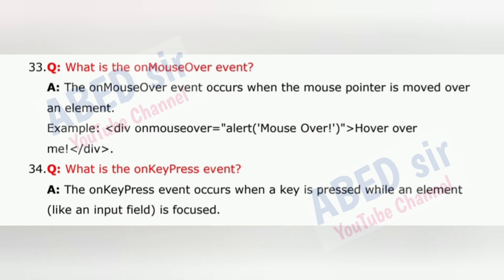Question 33: What is the onmouseover event? The onmouseover event occurs when the mouse pointer is moved over an element. Example: <div onmouseover='alert("mouse over")'>Hover over me</div>.